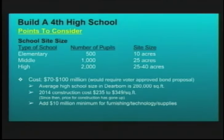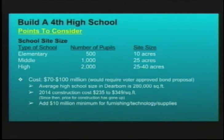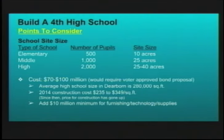Another trending topic is the creation of a fourth high school. Key points to consider: a high school of about 2,000 students would require 25 to 40 acres of land for the building, athletic facilities, and parking. Construction cost would be approximately $70 to $100 million. The district does not have that money on hand and would need voter approval through a bond proposal. Business services research identified average Dearborn high school size at about 280,000 square feet; at approximately $300 per square foot based on 2014 data, construction alone comes to roughly $80 million, plus about $10 million for furnishings, technology, and supplies.